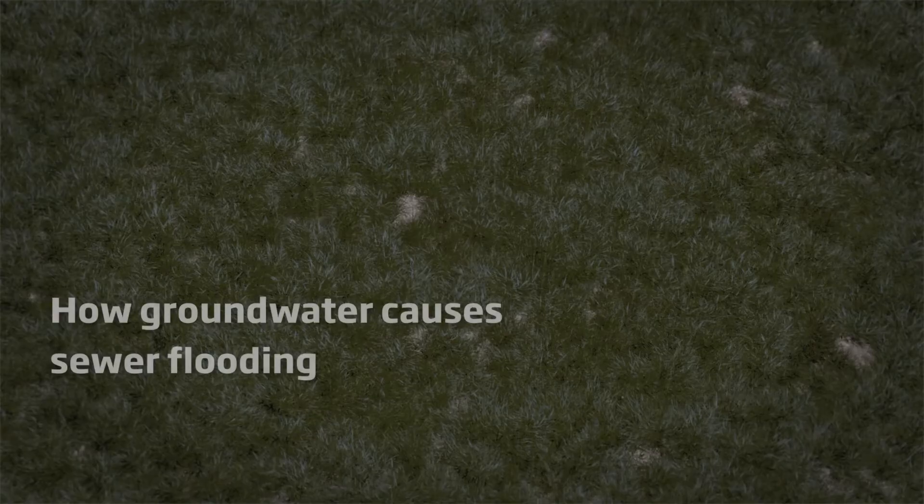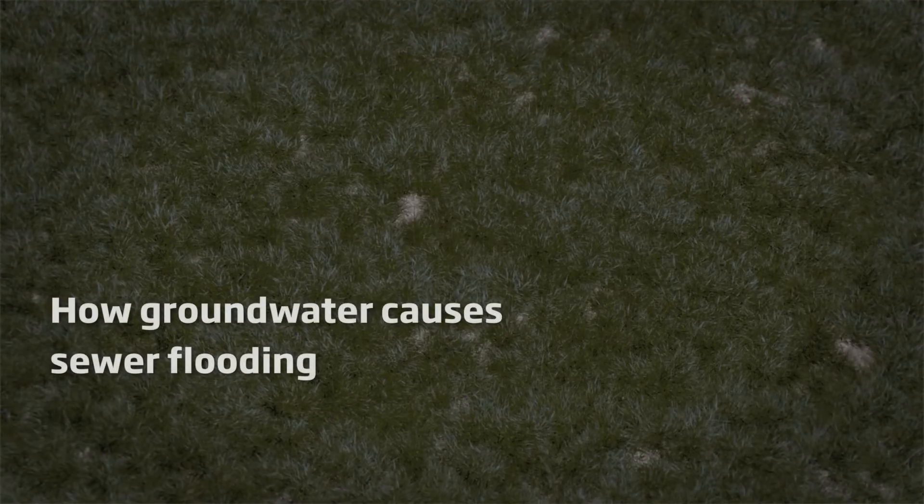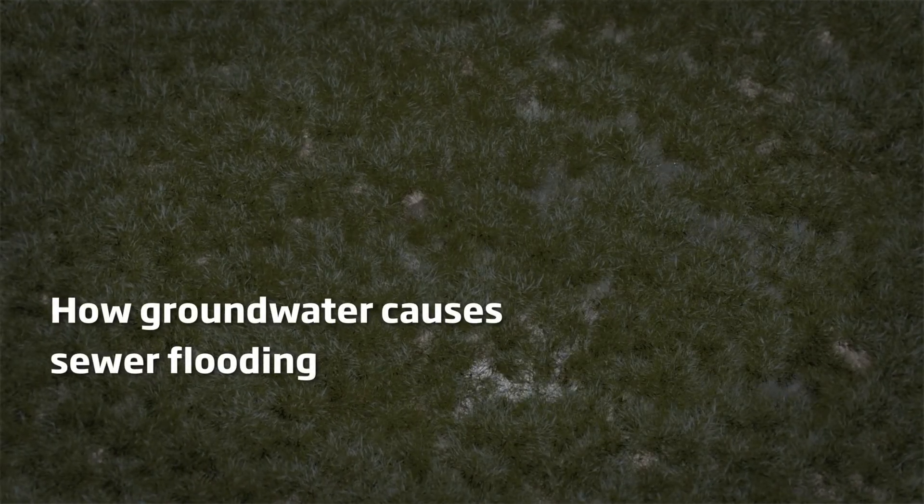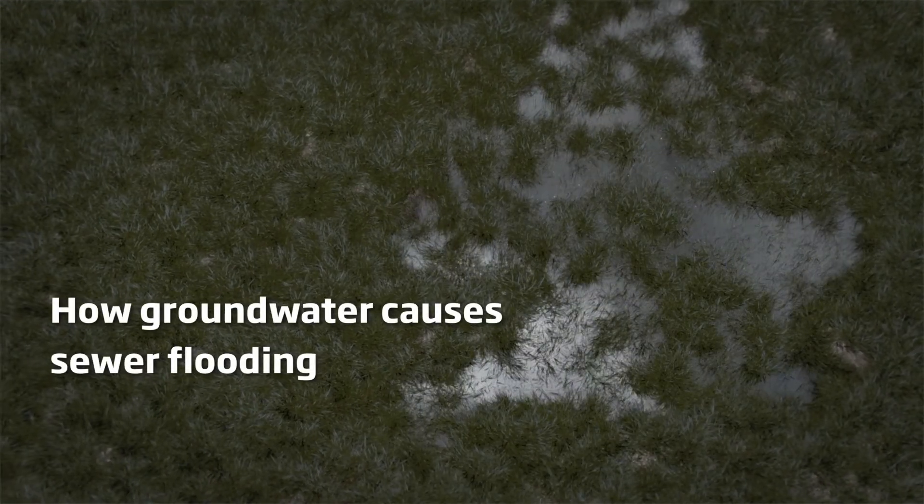This video shows how seasonal groundwater can cause sewer flooding. This can happen when the ground becomes saturated, often after long periods of rain.